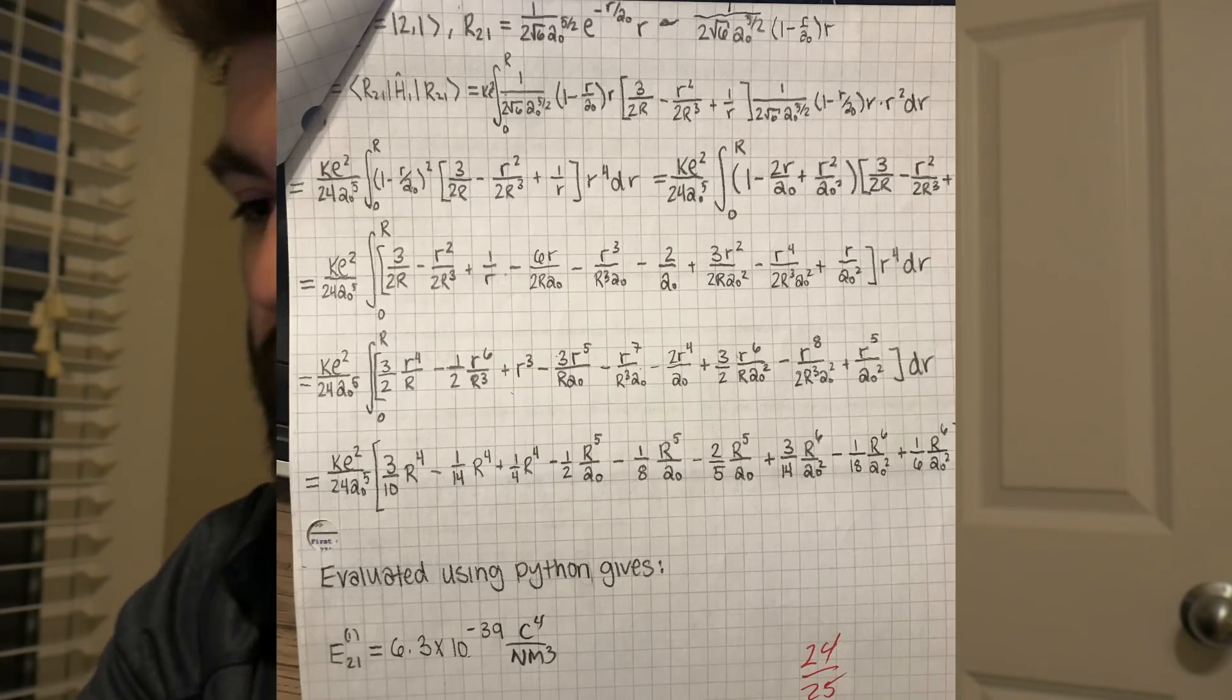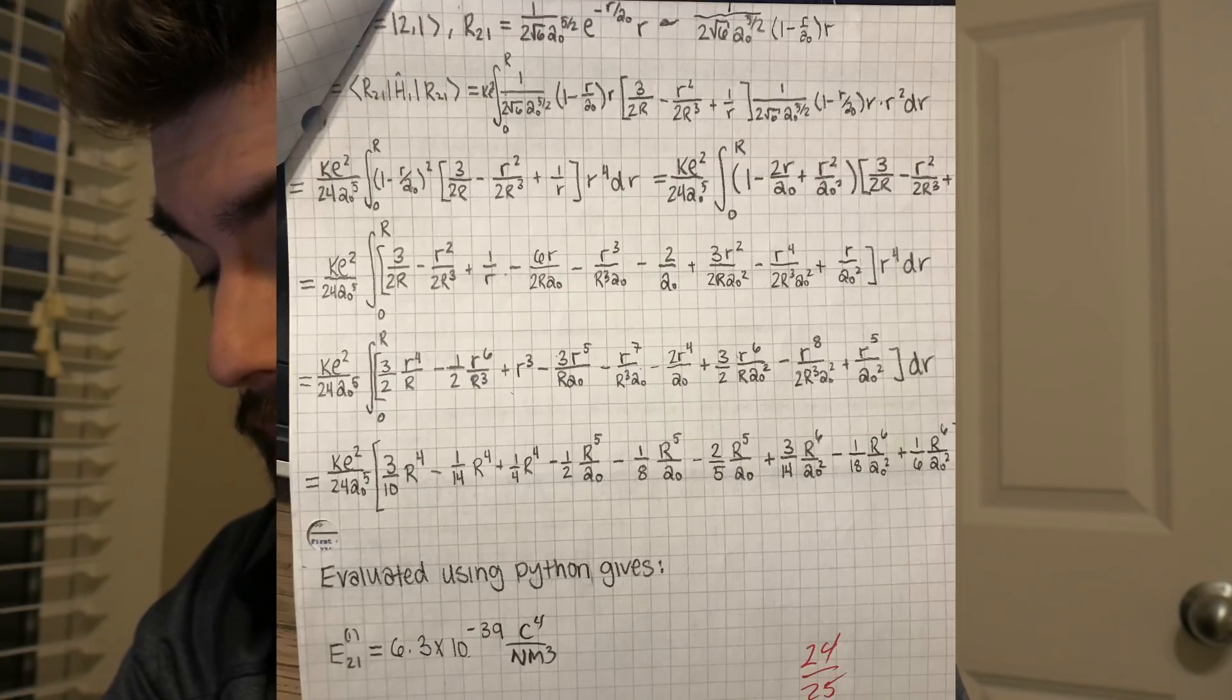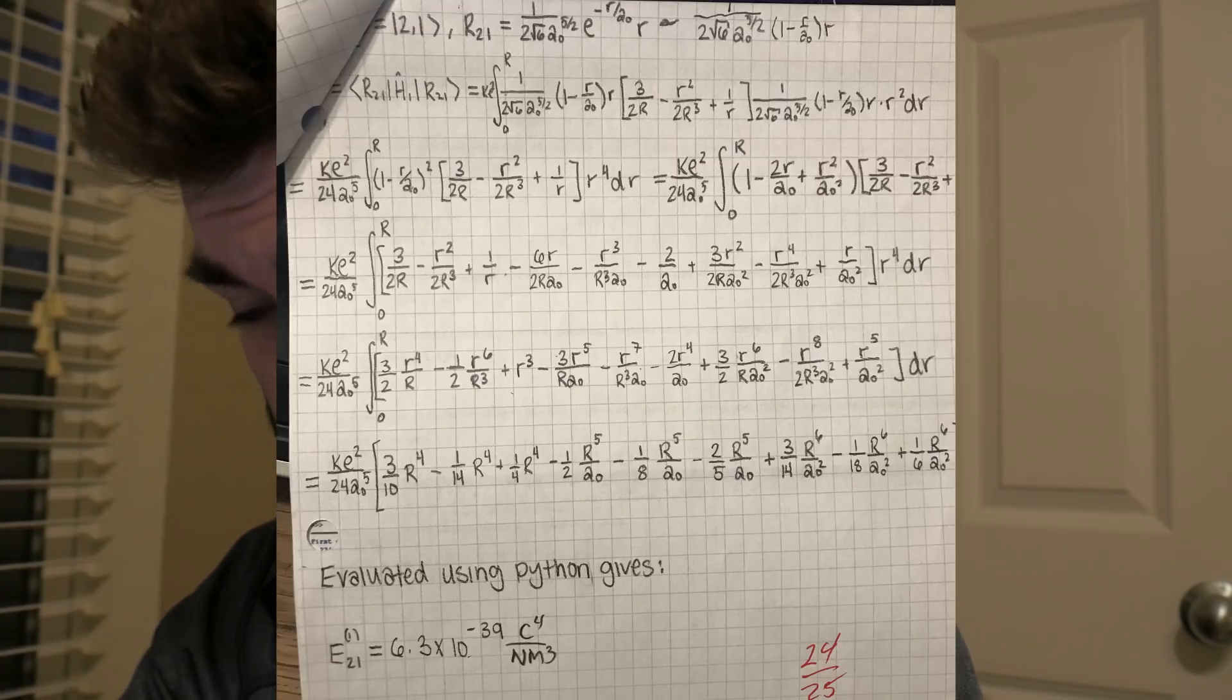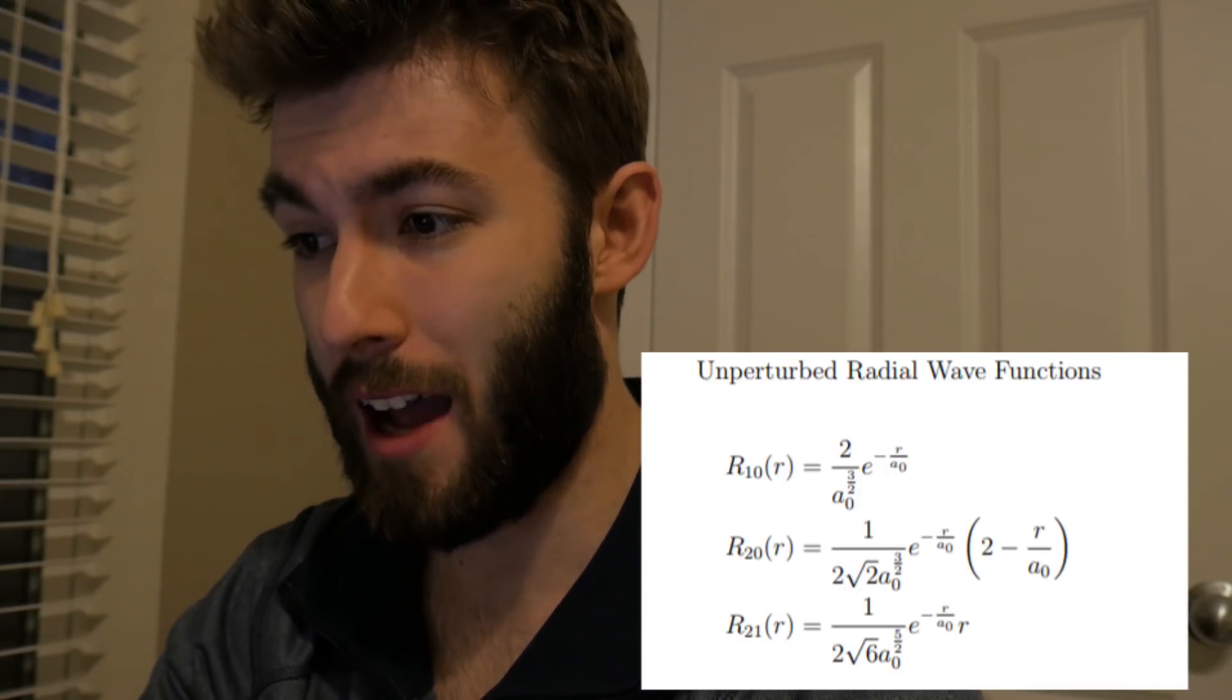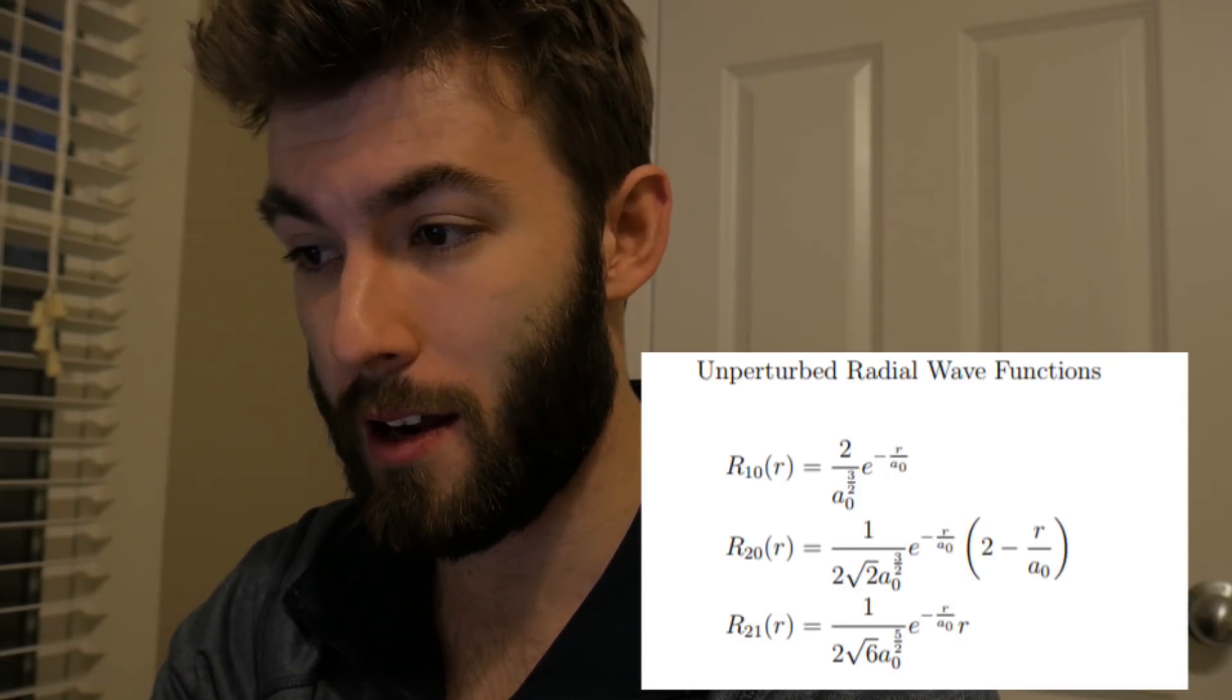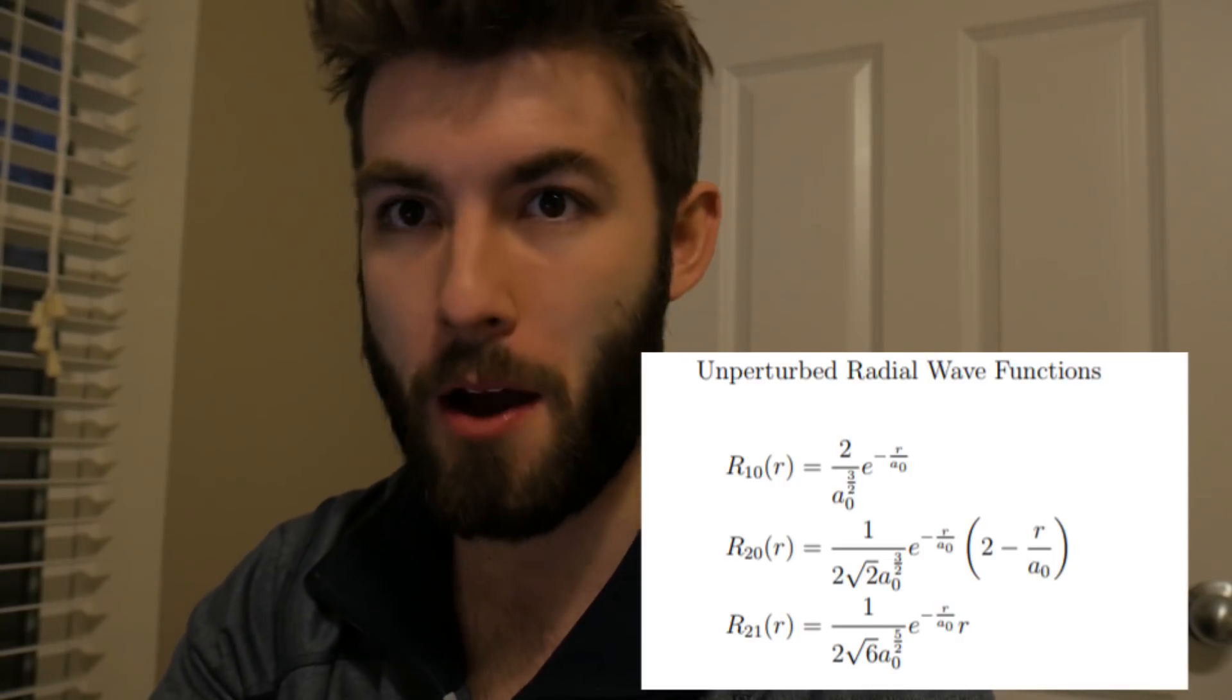Here's the third page where we do it again for the third wave function, which is actually easier. So the second wave function was the one that had the most, I guess, algebra, just because if you distribute that exponential, you have two terms. So it's just twice the amount of power rule, I guess.